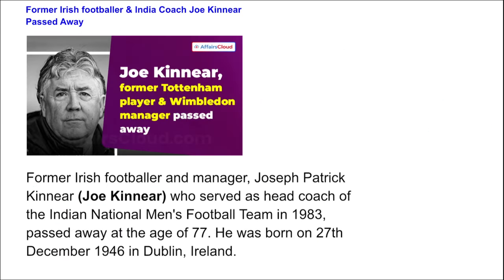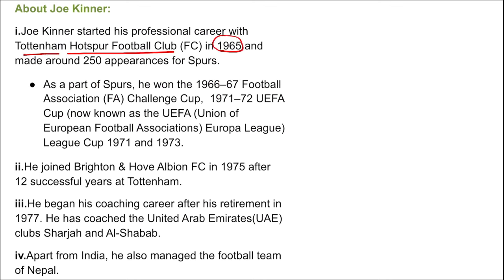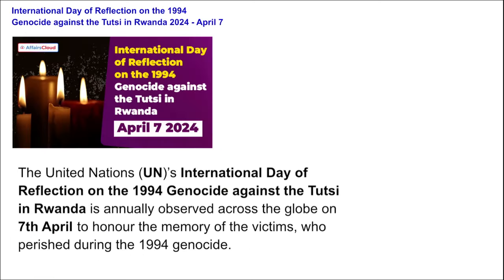Next: Former Irish footballer and Indian coach Joe Kinnear recently passed away. Joe Kinnear served as the head coach of the Indian national men's football team in 1983 and passed away at the age of 77. He was born on 27th December 1946 in Dublin, Ireland. He started his professional career with Tottenham Hotspur in 1965, making around 250 appearances. As a Spur, he won the 1966–67 FA Cup, the 1971–72 UEFA Cup, and the European League Cup in 1971 and 1973. He joined Brighton and Hove Albion in 1975 and began his coaching career after retirement in 1977. He also managed the football teams of UAE clubs Sharjah and Al-Shabab, and apart from India, he also managed the Nepal football team.